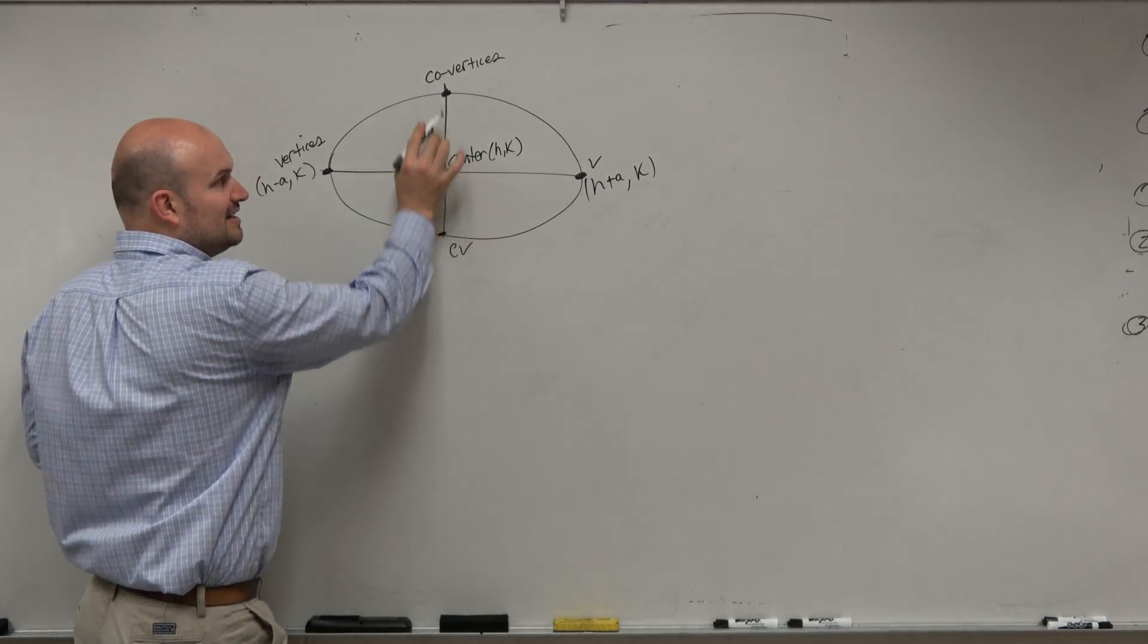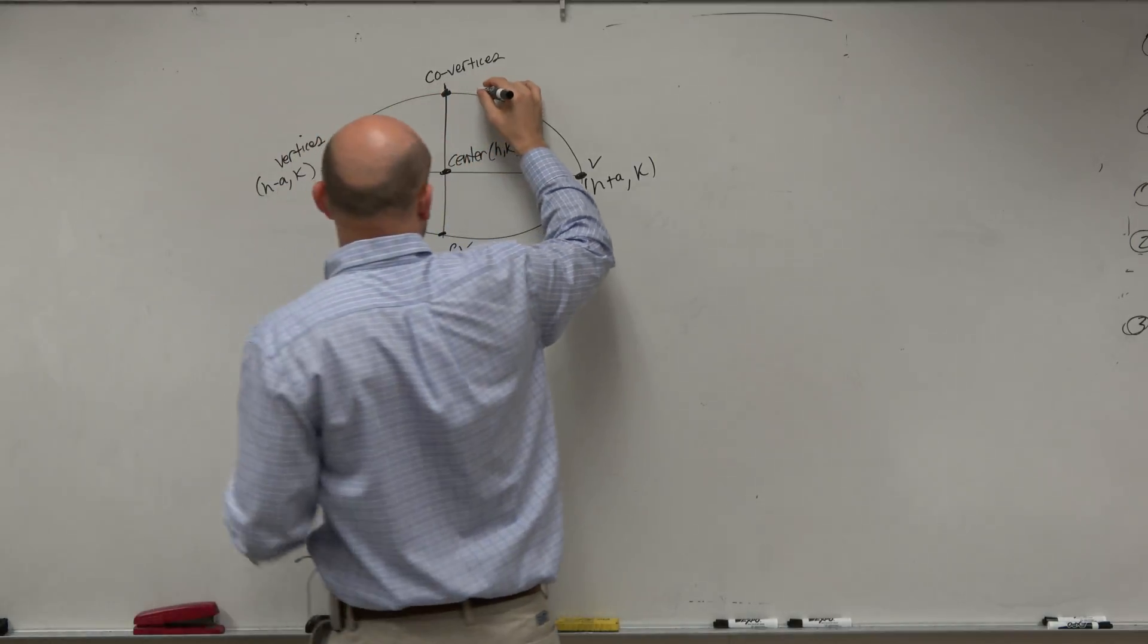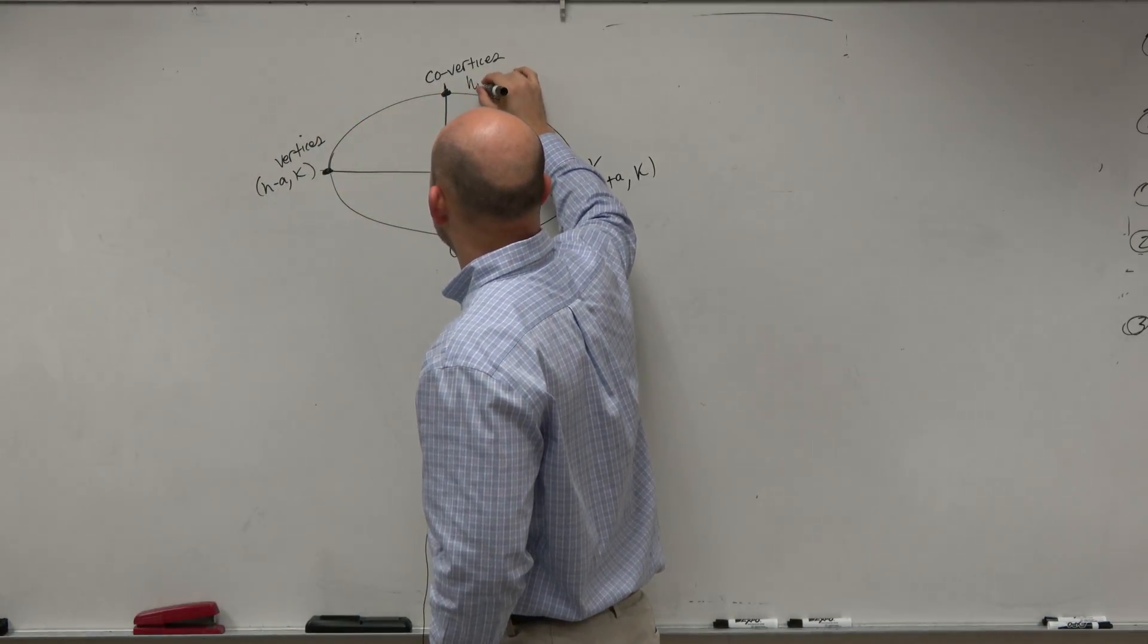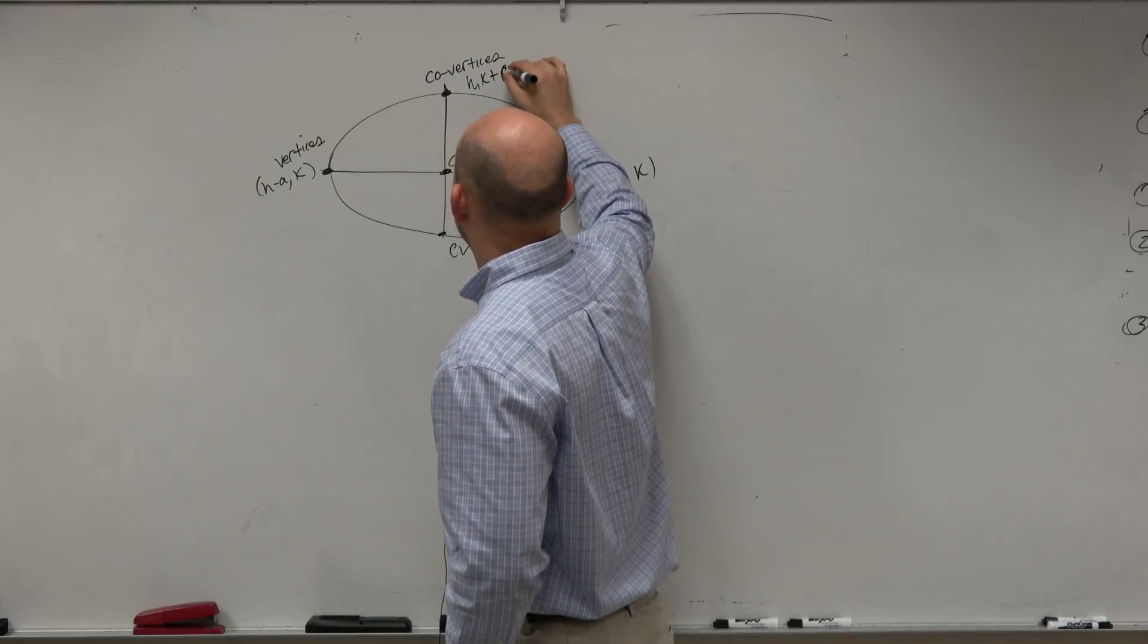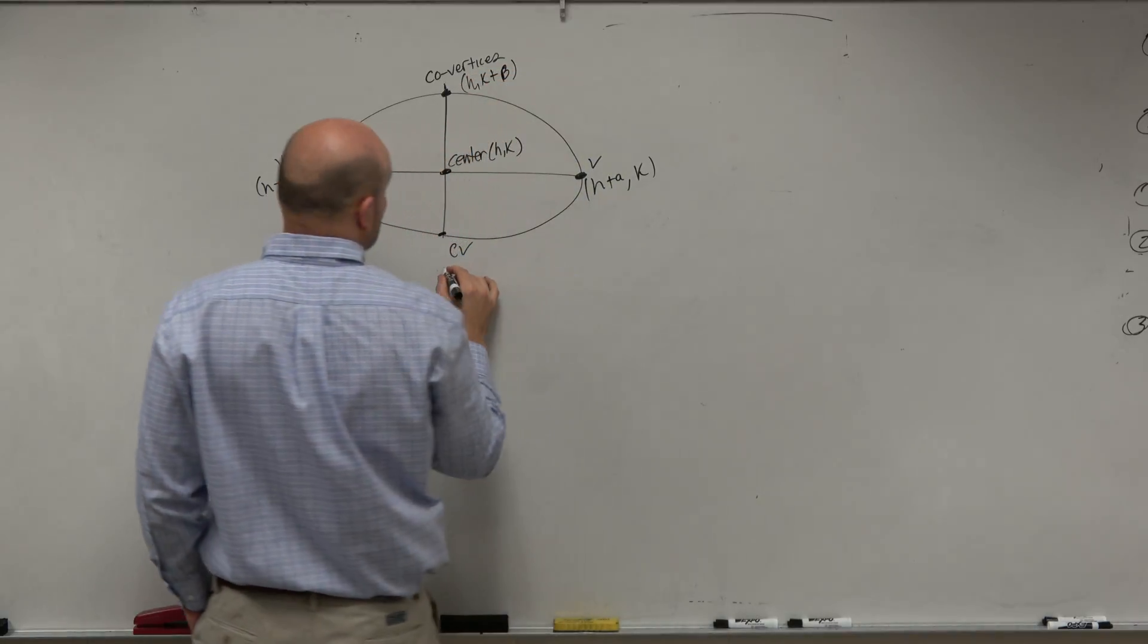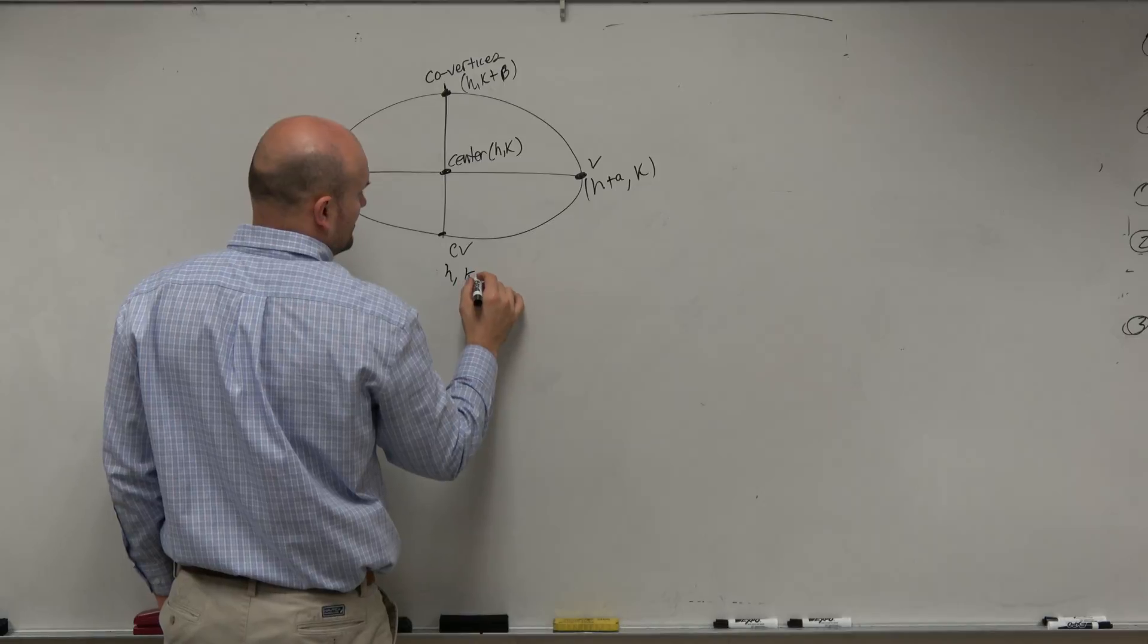So if I wanted to find what the values of these co-vertices were, I could just add b to my k coordinate of my center. And then this would be h comma k minus b.